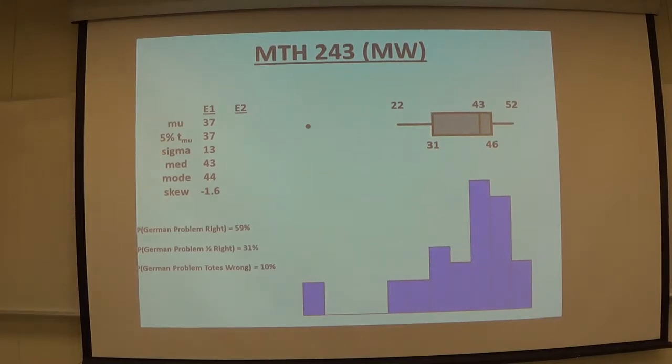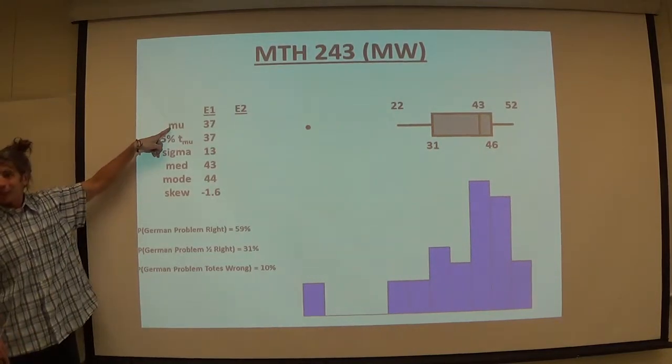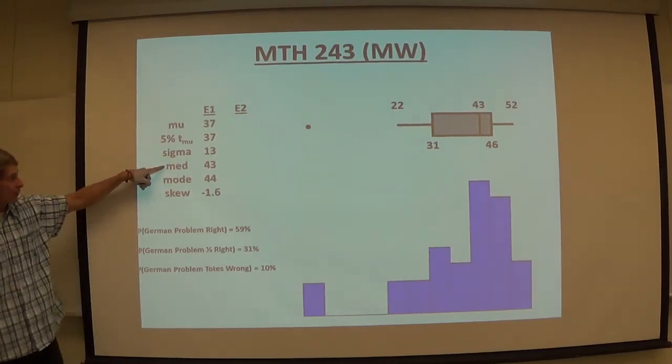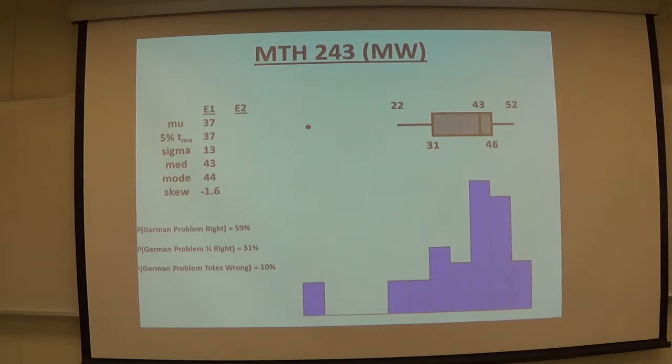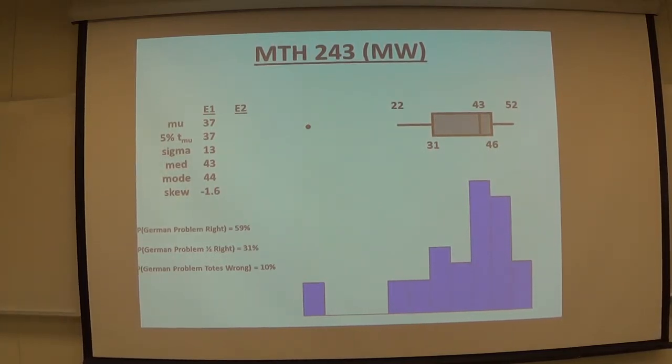There are some people that haven't taken it yet, number one. And one person hasn't been here at all. They've got a zero as well. So by definition your average is going to suck because of that. I'm not going to come in here and tell the class average is a 37. Because that's not a fair way of reporting it.